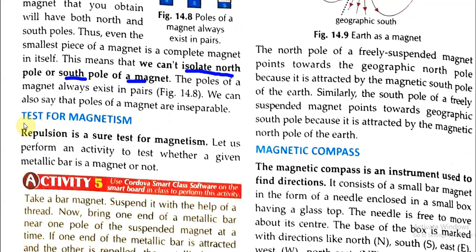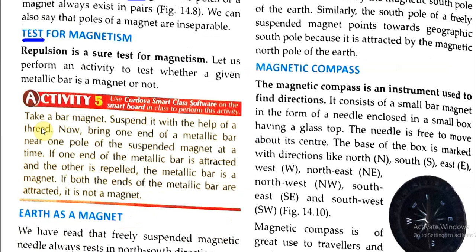Next, repulsion is a sure test for magnetism. Let us perform an activity to test whether a given metallic bar is a magnet or not. Take a bar magnet and suspend it with the help of a thread. Now bring one end of the metallic bar near one pole of the suspended magnet at a time. If one end of the metallic bar is attracted and the other is repelled, the metallic bar is a magnet.